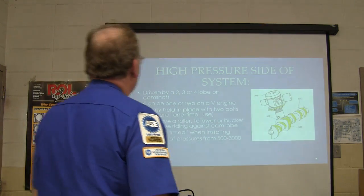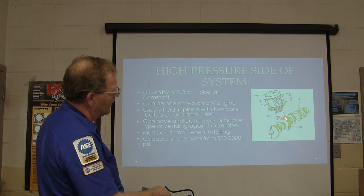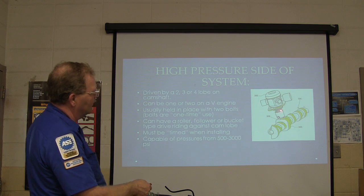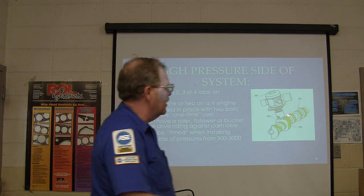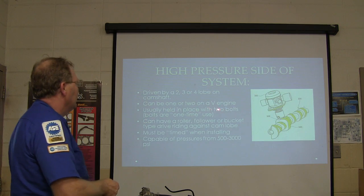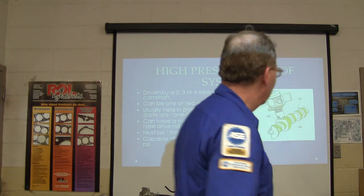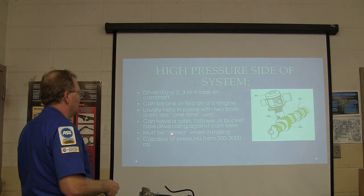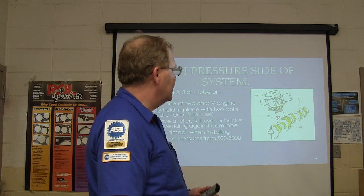The GDI injectors are on the high-pressure side. The high-pressure pump sits on lobes of a dedicated multi-lobe camshaft — most commonly three lobes, though some have two or four. It has a roller follower or bucket tappet riding against the cam lobes, similar to a roller lifter. It must be timed properly on installation. It's capable of generating 500 to 3,000 PSI. It is a positive displacement pump.